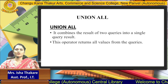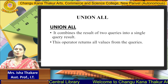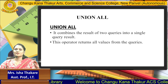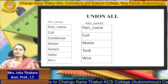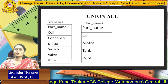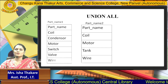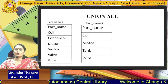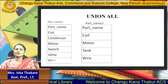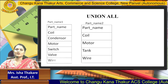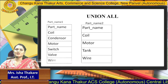Next is the Union All operator. It combines the result of two queries into a single query result, but this operator returns all values from the queries including duplicates. Here is a sample table: the first data table is Part Name 1 and the second is Part Name 2, both containing a part name field.